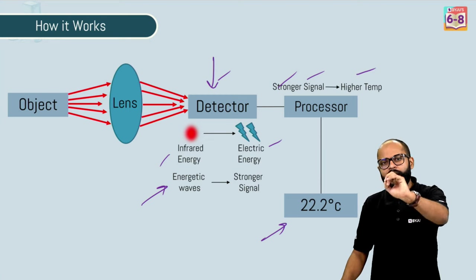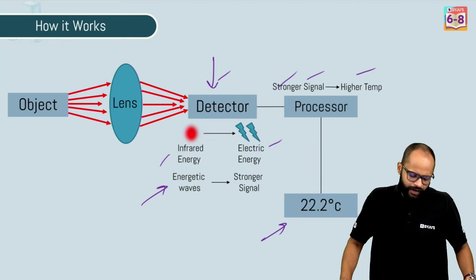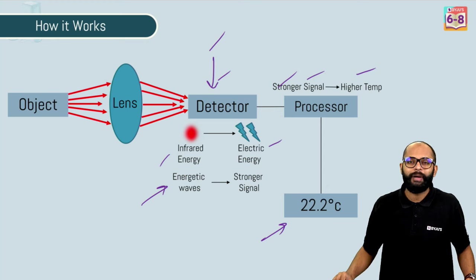Object, lens, detector, processor and display. That's it. Simple device, easy device, detector is thermopile for you.